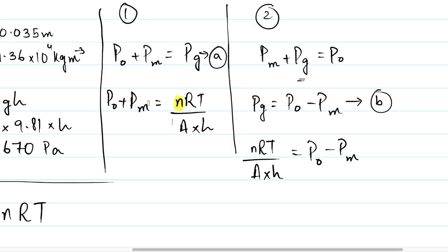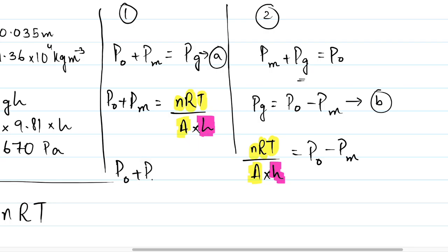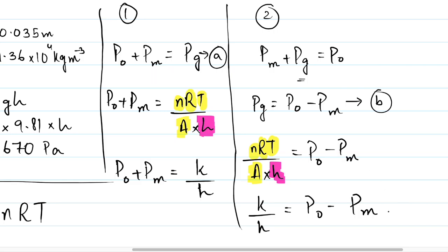Because the gas is trapped, the number of moles remains the same. The molar gas constant R is the same, temperature doesn't change, and the cross-sectional area remains the same. The only thing changing is the height of the column. So nRT/A is a constant, and we can write: P₀ + P_m = constant / h (equation C), and P₀ − P_m = constant / h (equation D).